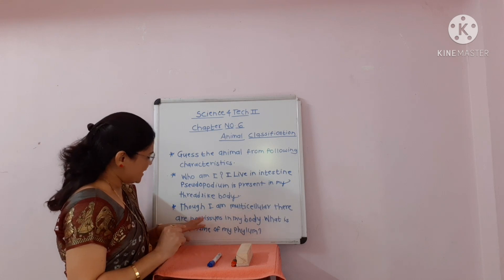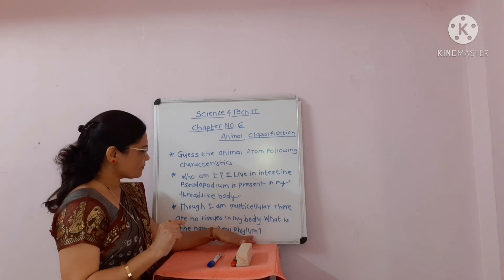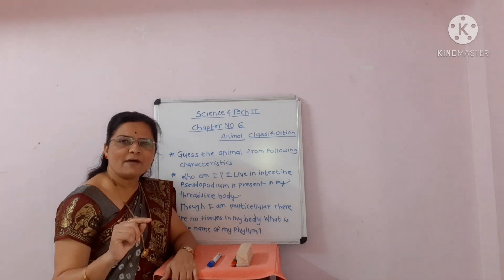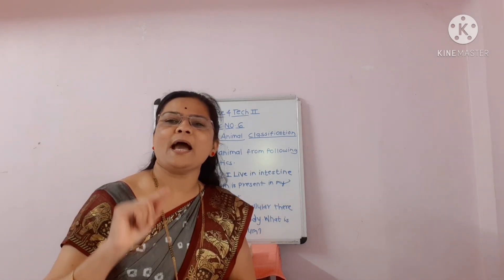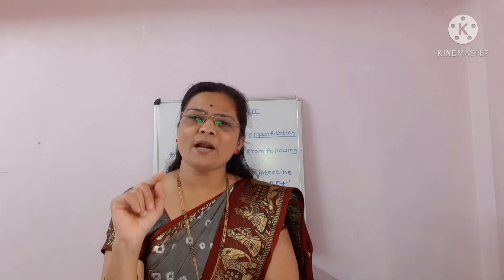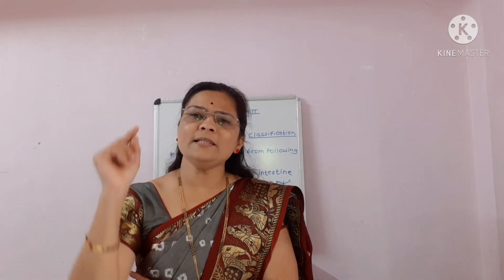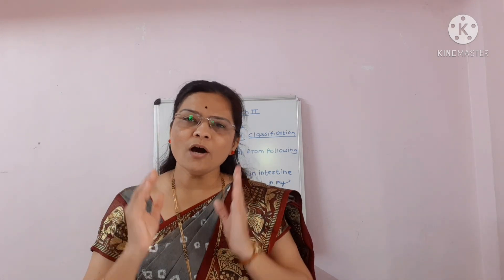Though I am multicellular, there is no tissue in my body. What is the name of my phylum? The name of the phylum is Porifera — sponge. The characteristics include: perforated body is present, and ostia are present on the body. By this way, you have to memorize all the phylums of non-chordates and their examples and characteristics. Students, do not overlook the diagrams.